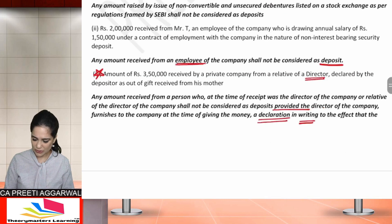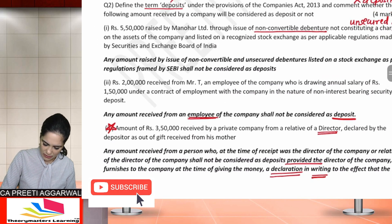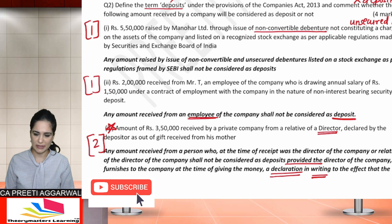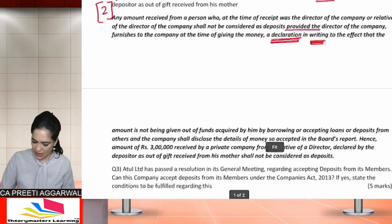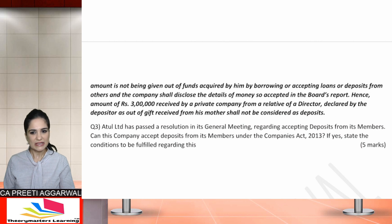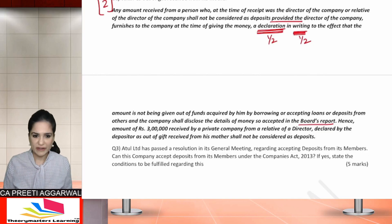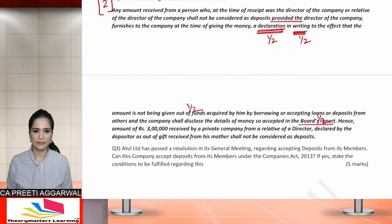Since he has received the money and declared it as a gift, it will not be considered as a deposit. This question carries 4 marks: 1 mark for the first part, 1 mark for the second, and 2 marks for the third point. You must write that the declaration is in writing, that the money is from his own funds and not borrowed funds, and this will also be disclosed in the Board's report. Half mark for declaration details, half mark for disclosure in the Board's report.